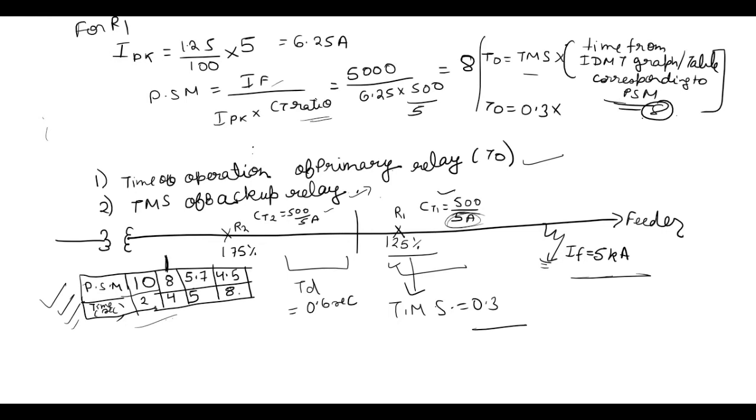So T0 is equal to TMS was given 0.3 into PSM which is 8. See this, 8 is written in two places. Don't take this one. We have to see PSM 8 which is this. And now we take this time 4 seconds which is equal to 1.2 seconds. So time of operation of primary relay is equal to 1.2 seconds.